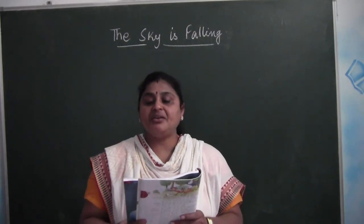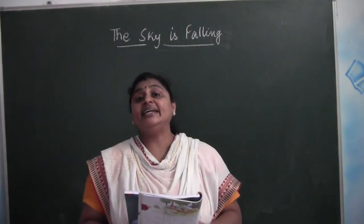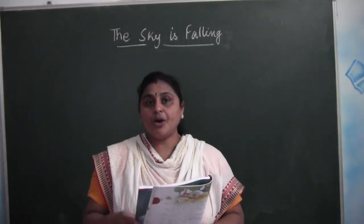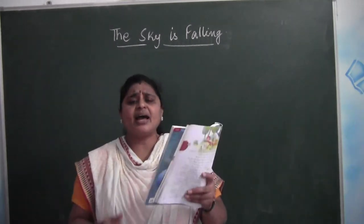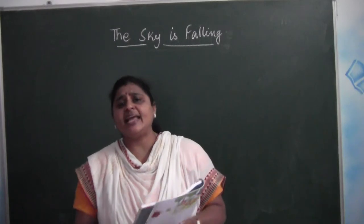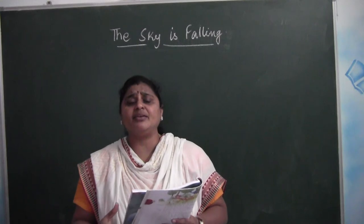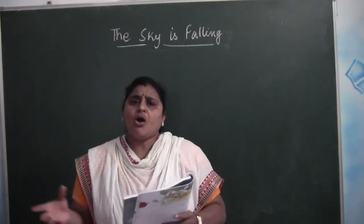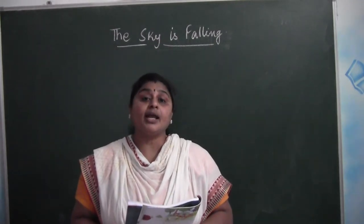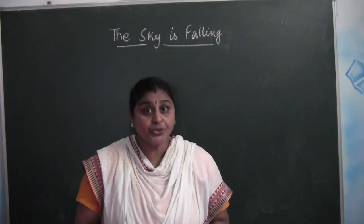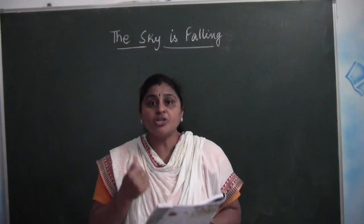All five of them ran and reached the lion's den. The lion lives in a den, children. The lion asked: 'What is all this noise about?' All five had come running and finally reached the lion's den. Looking at them, the lion asked what happened. All five started talking together: 'Oh king, the sky is falling — what shall we do?'